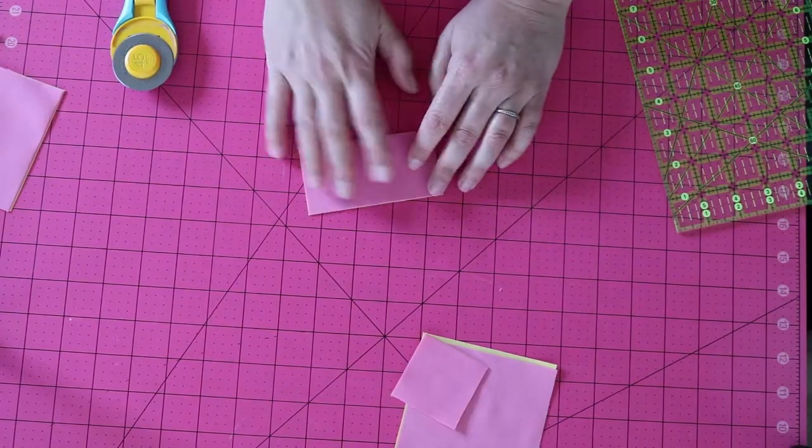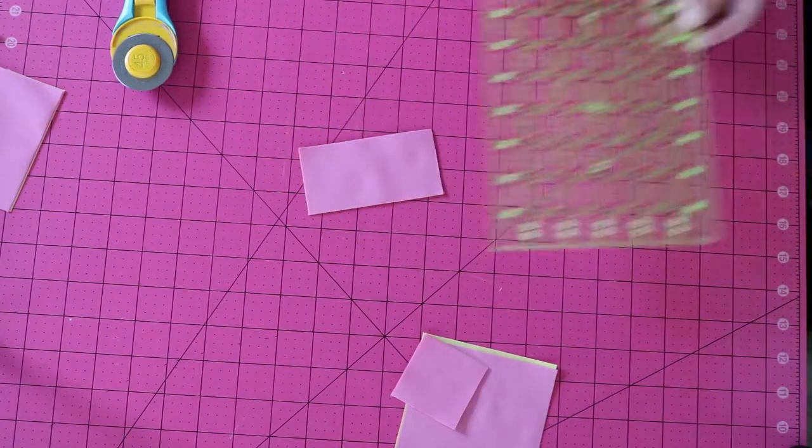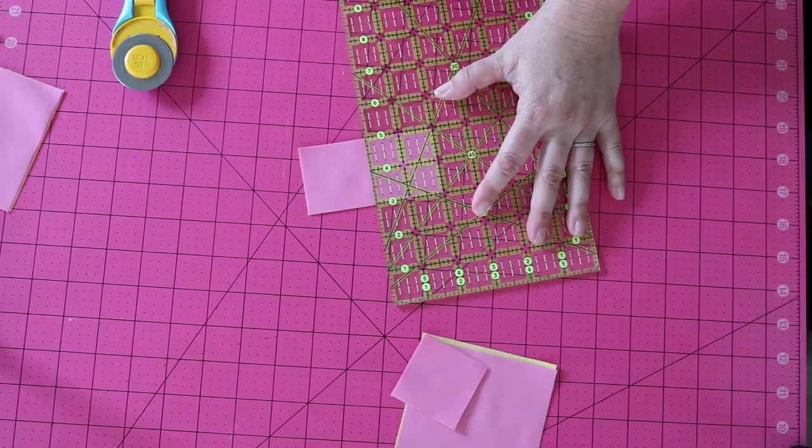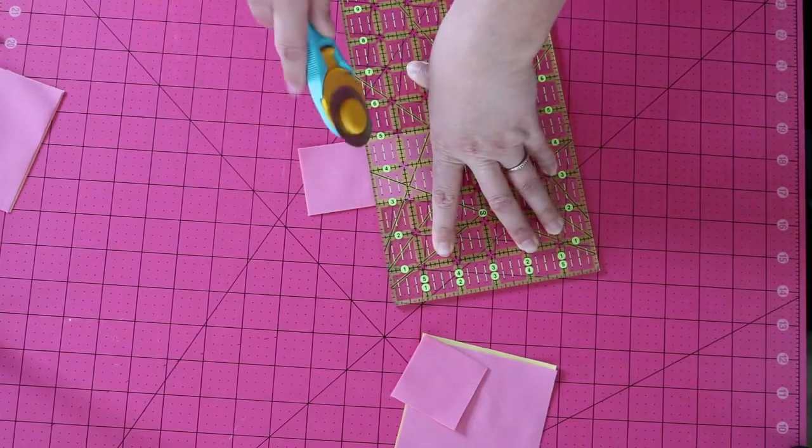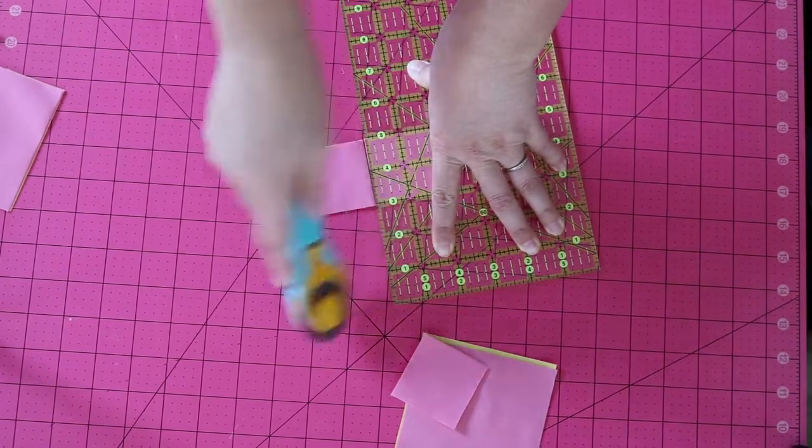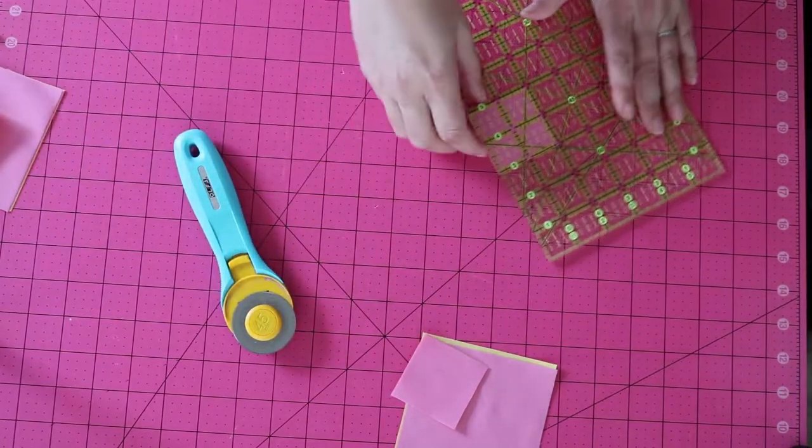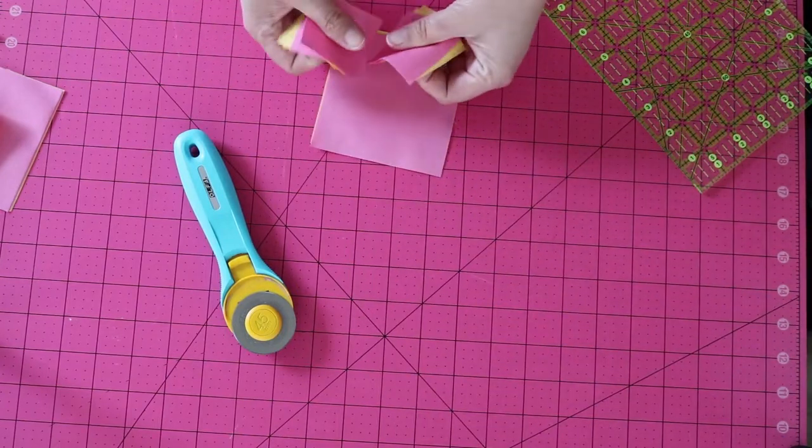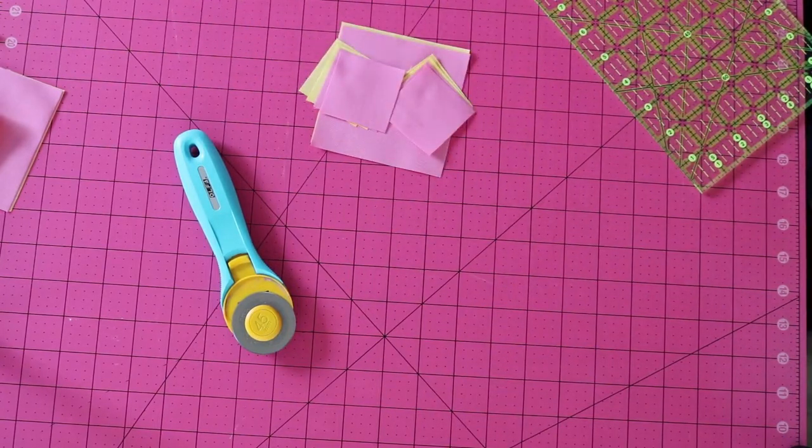It's going to be so easy to mix up the scrap from the two inch piece because they're only an eighth of an inch apart in size so make sure that you toss that scrap into your scrap bin right away so it doesn't get mixed up. So there we go I have all the pieces that I need for my hourglass quilt block.